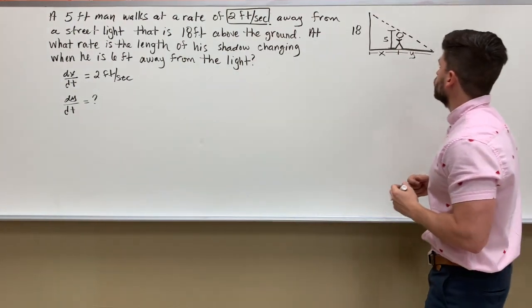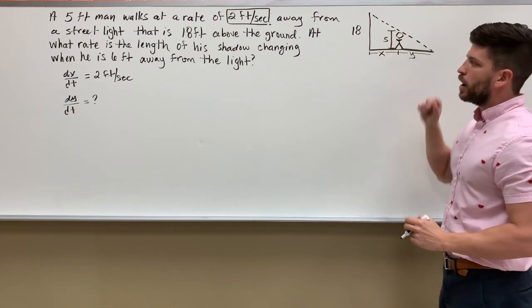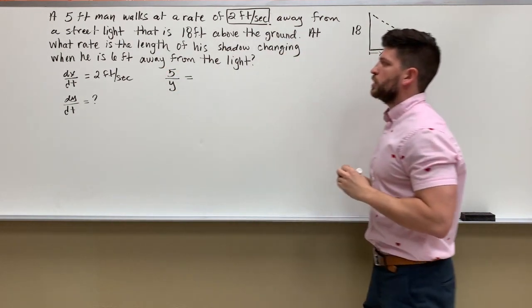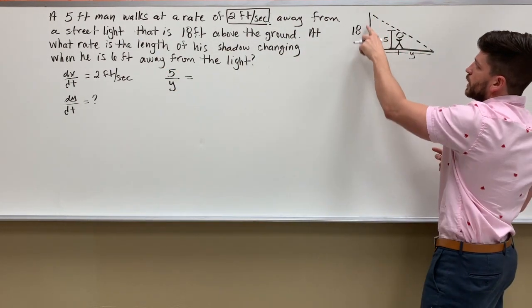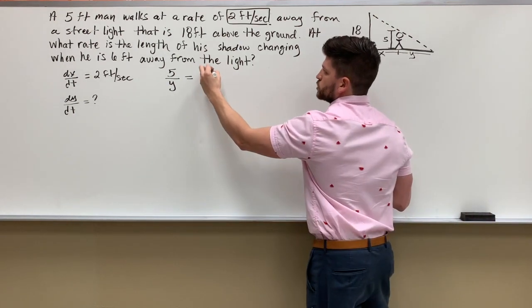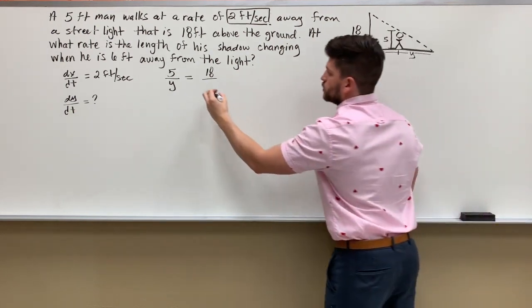So if I look at the little triangle, I have 5 over y, and that is going to be proportionate to, in terms of the big triangle, 18 over this side length, which is going to be represented by the sum of x and y. So x plus y.